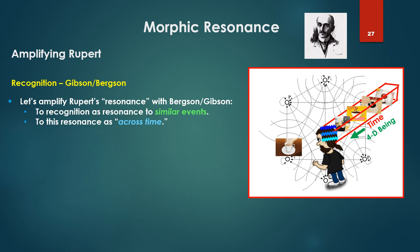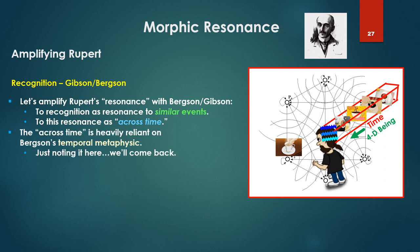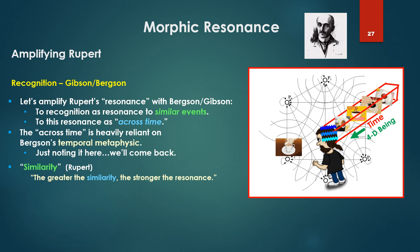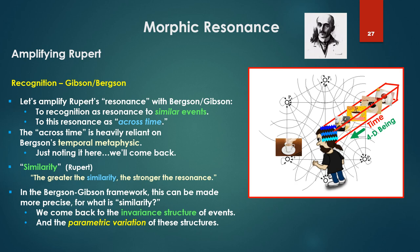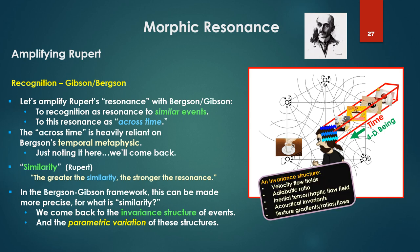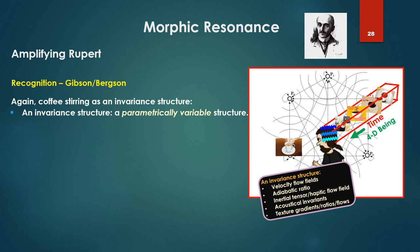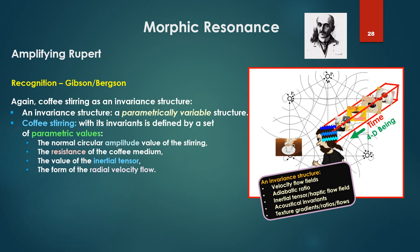Let's amplify Rupert's resonance with Bergson and Gibson — relate his recognition as resonance to similar events, and this resonance as across time, heavily reliant on Bergson's temporal metaphysic. Similarity, as Rupert noted — the greater the similarity, the stronger the resonance. In the Bergson and Gibson framework, this can be made more precise: what is similarity? We come back to the invariant structure of events: the coffee stirring with velocity flow fields, adiabatic ratios, inertial tensors, carried over the haptic flow fields, acoustical invariance, texture gradients and ratios, and the capability of parametric variation of these structures. Coffee stirring as an invariant structure is a parametrically variable structure defined by a set of parametric values.